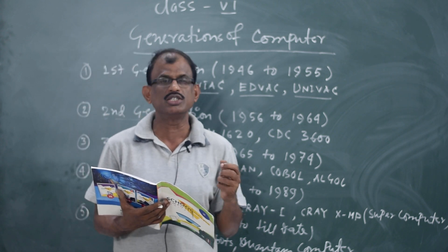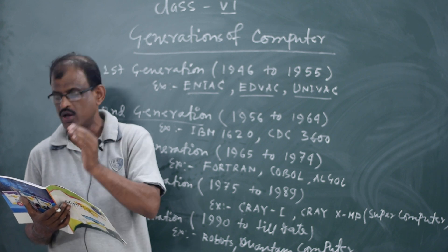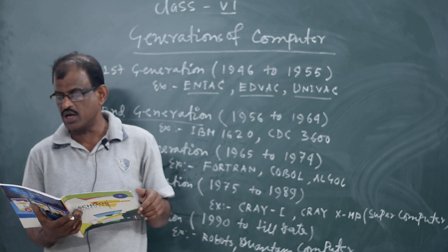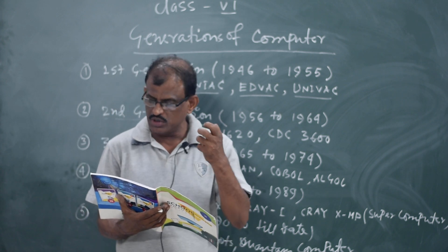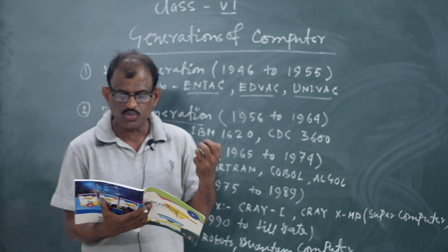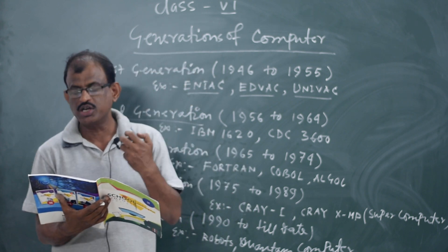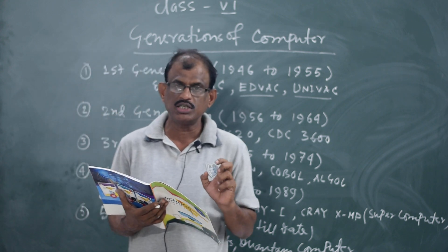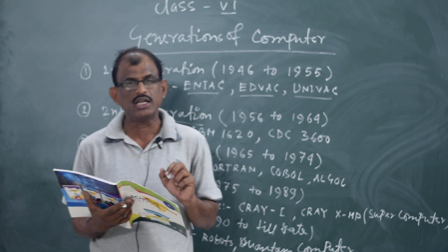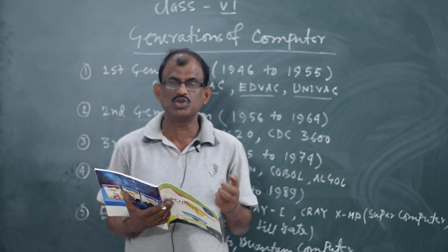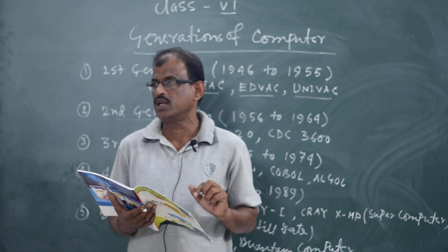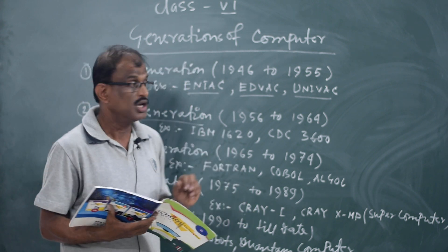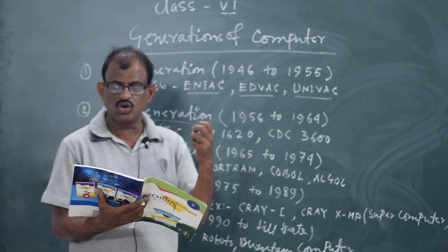These computers were smaller in size compared to first and second generation. They used remote processing, time sharing, and multiprogramming as the operating system. An operating system is system software which manages all activities of the entire computer system. High-level programming languages also began to be used in the third generation.